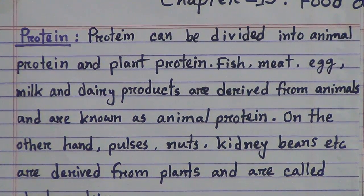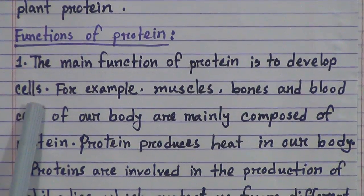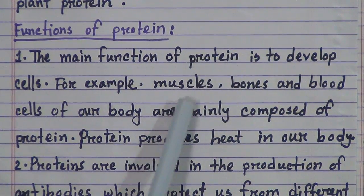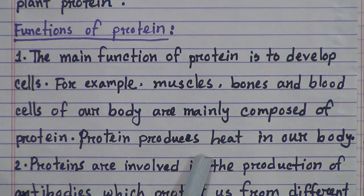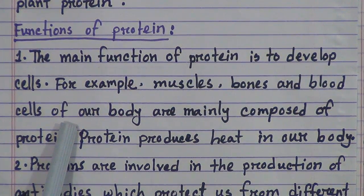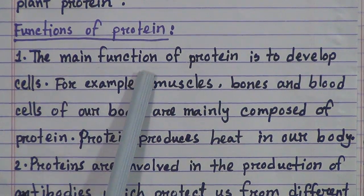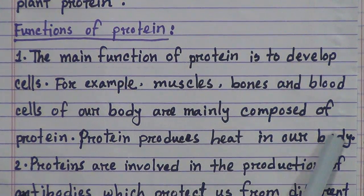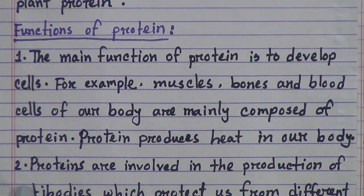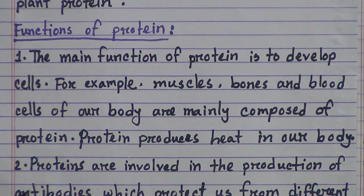Now we will discuss the functions of protein. Number 1, the main function of protein is to develop cells. Muscles, bones and blood cells of our body are mainly composed of protein. Protein also produces heat in our body. Number 2, proteins are involved in the production of antibodies which protect us from different diseases.